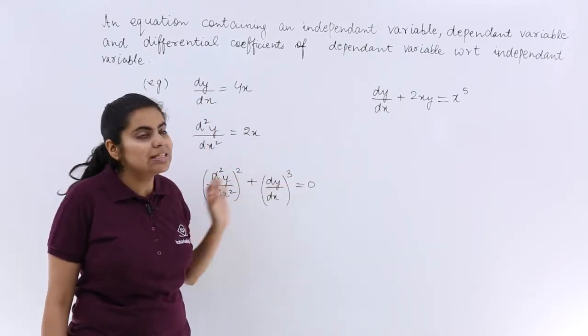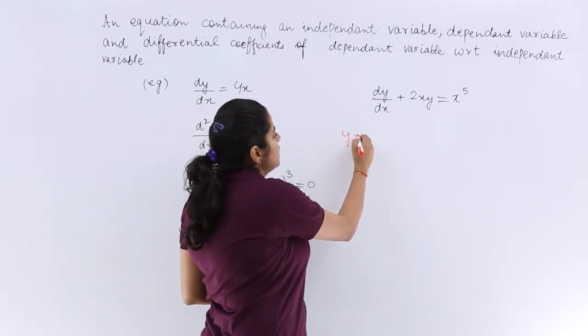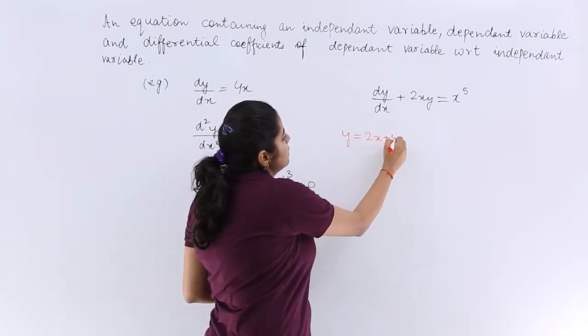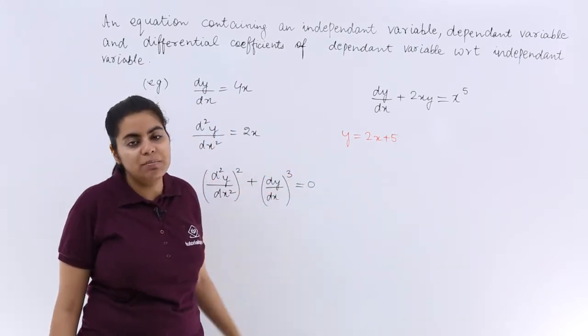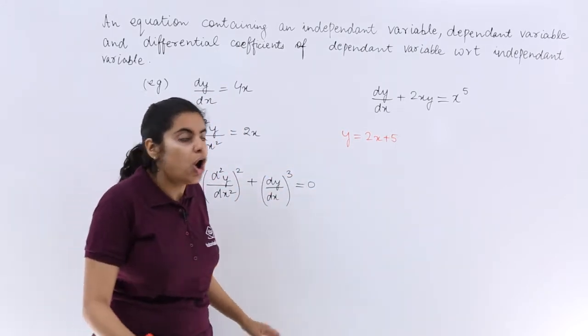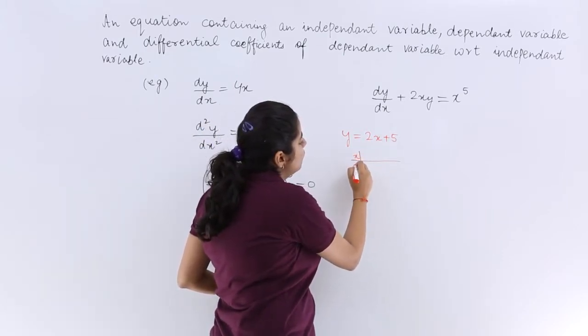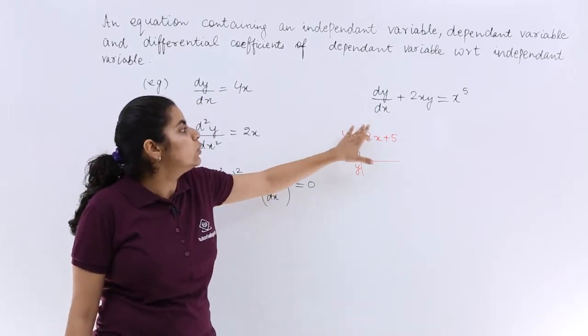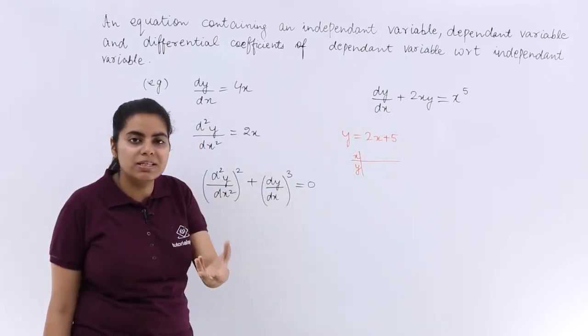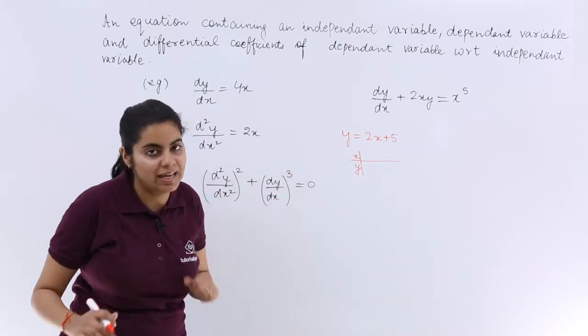Before moving on to these examples, let me make it clear to you. Suppose I have y is equal to 2x plus 5. Now this is y equals mx plus c form. Or if I say that different values of x will give me different values of y. So these are the two variables I'm taking into consideration: one variable is y, the other variable is x.